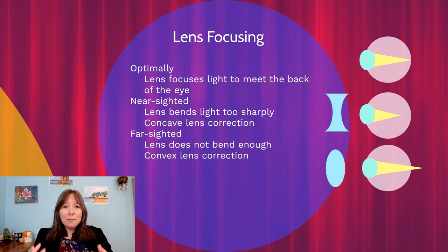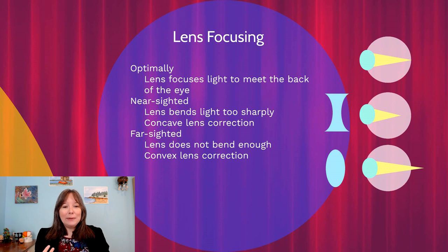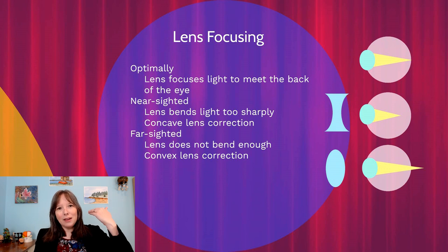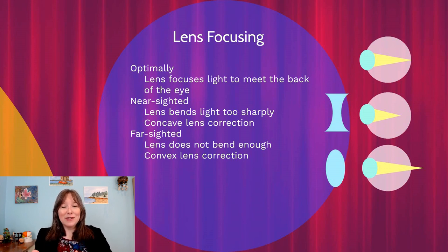Optimally, the lens focuses light so it meets at the back of the eye. However, in nearsighted eyes, the lens bends light too sharply so it doesn't meet at the retina. Nearsighted people can read books and work on computers, but have trouble seeing road signs while driving. One correction is a concave lens — though note that my diagram shows the uncorrected eye even with the corrective lens drawn in front of it.